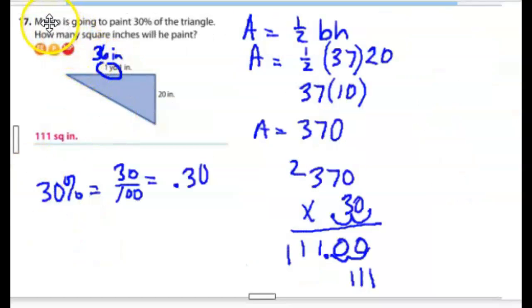Now, number 17. Marco's going to paint 30% of the triangle. How many square inches will he paint? The first thing I have to do is figure out the area. So again, I wrote the area formula. Area is equal to one-half base times height. But you know what? I'm looking at the base here. It says yards.